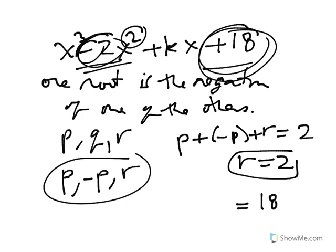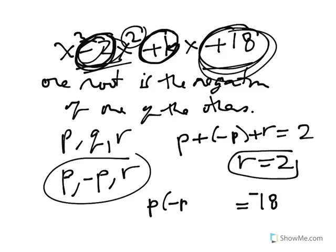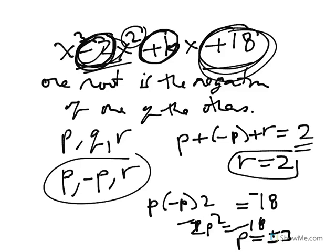The 18 is the negative sum of the roots taken three at a time — in other words, the product of the roots. The three roots are p, minus p, and r, which is already known to be 2. So I get minus 2p squared equals negative 18, and p equals plus or minus 3.